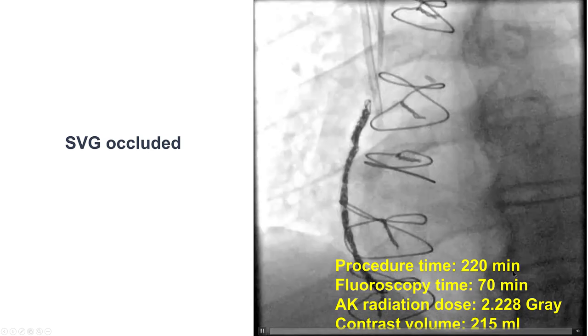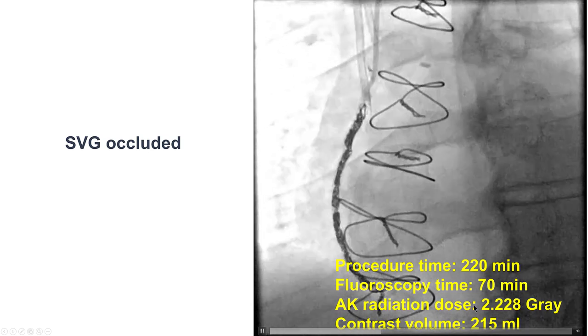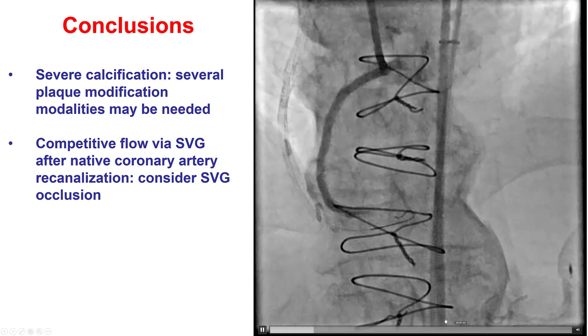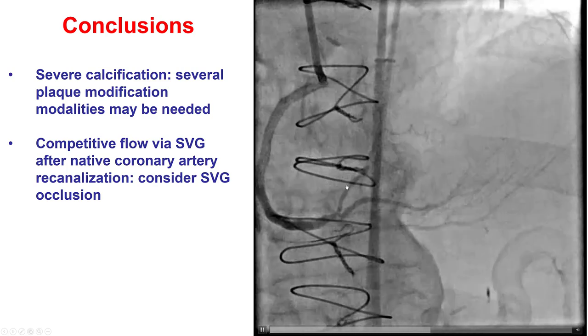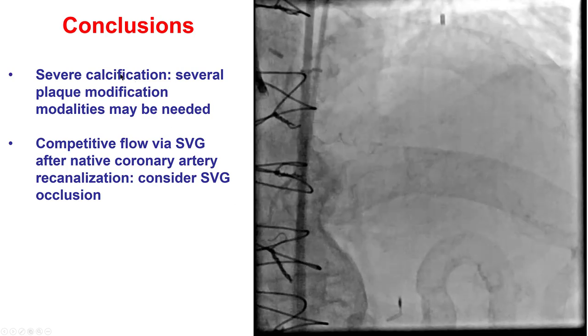This took about 3 hours, 70 minutes of fluoroscopy, 2.2 gray of radiation, and 215 mL of contrast. This is the final result with good flow into the right coronary artery.